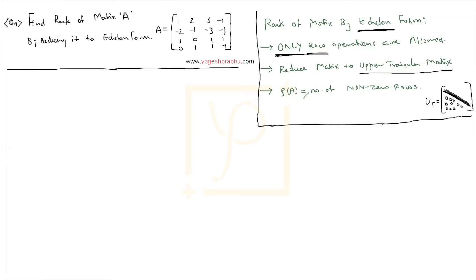So we will see all these steps in action when we solve this question. So let us begin the solution of this one and we are asked clearly to find the rank of matrix A by reducing it to echelon form.